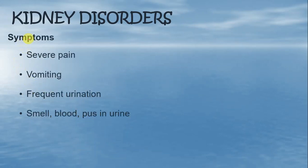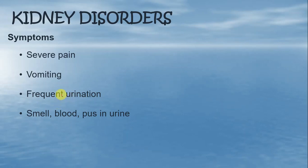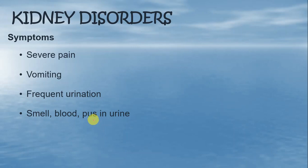Next, देखते हैं symptoms — किस तरह से पता चलता है किसी person को kidney में stone है. Number one, severe pain — patient को kidney में या lower abdomen में बहुत ज्यादा pain feel होता है. Number two, vomiting — ऐसे patient को vomiting भी होती है. Number three, frequent urination — बार-बार urine pass करना. Then last, foul smell, blood, and pus in the urine — ऐसे patient के urine से एक खास किसम की dirty smell आती है, और sometime urine के साथ blood और pus भी नजर आता है.